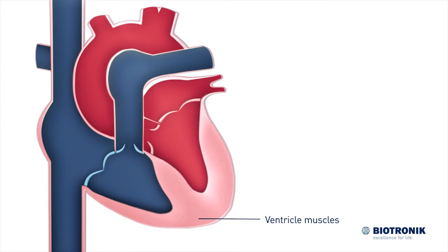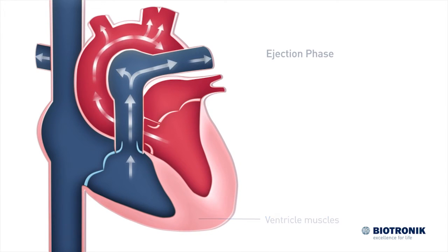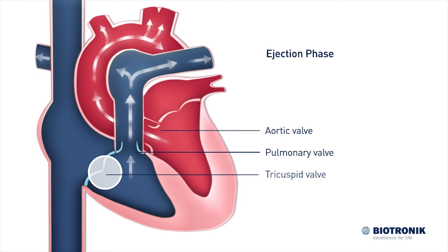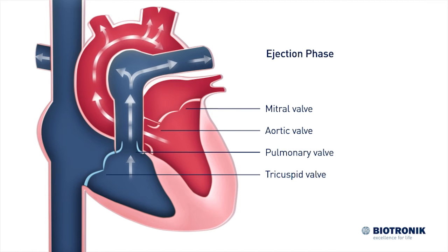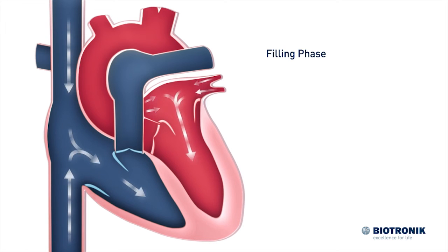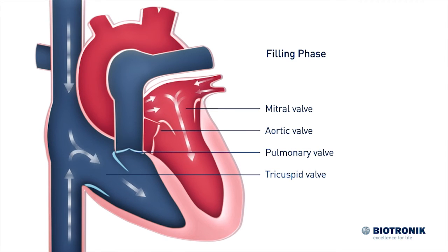Every time the ventricle muscles contract, blood is pumped into the circulatory system. During this time, the pulmonary and aortic valves are kept open and the tricuspid and mitral valves are kept closed. During the relaxation phase, the ventricles fill with blood. At this time, the mitral and tricuspid valves are open and the aortic and pulmonary valves are closed.